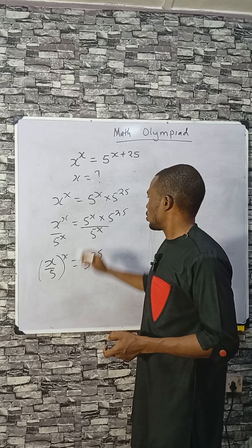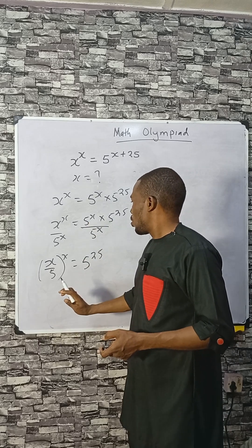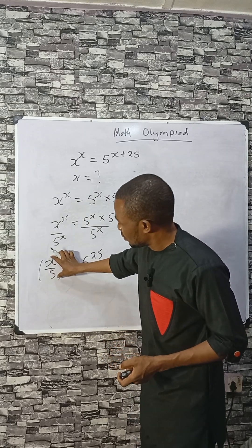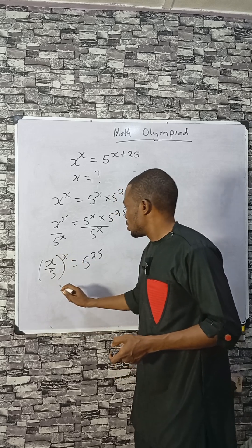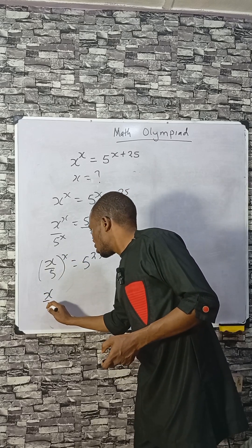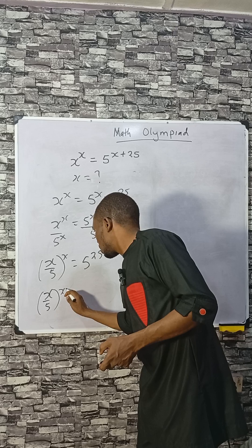Since this can take care of this, now we are looking at what to do so that we can have the base and the power to be the same. We can achieve that by multiplying the powers here by 1 over 5.